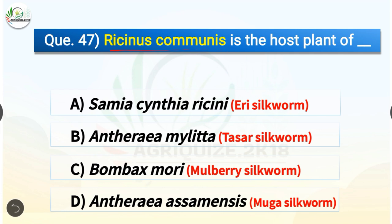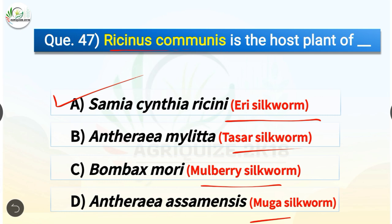Question number forty-seven: Ricinus communis is the host plant of — options are Samia cynthia ricini, Antheraea mylitta, Bombyx mori, or Antheraea assamensis. The correct answer is option A, Samia cynthia ricini, which is the eri silkworm. Antheraea mylitta is the Tasar silkworm, Bombyx mori is the mulberry silkworm, and Antheraea assamensis is the Muga silkworm.